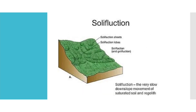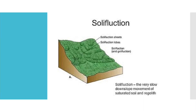Do we have the diagram? Yes, we have the diagram. You can see here that the Solifluxion sheets are called lobes. Here is a very slow downslope movement of the saturated soil and regolith.